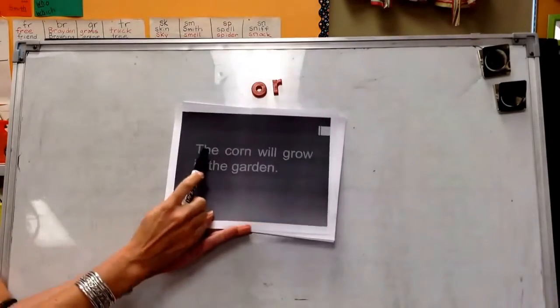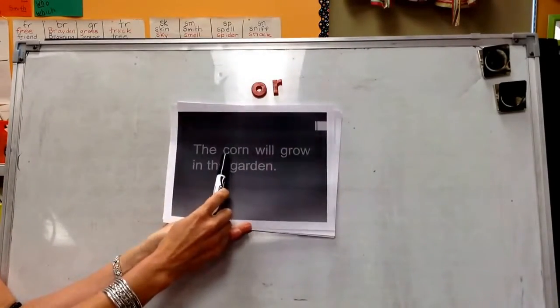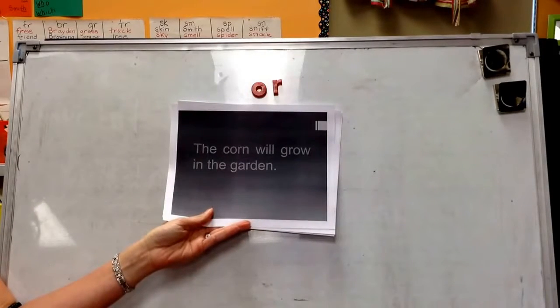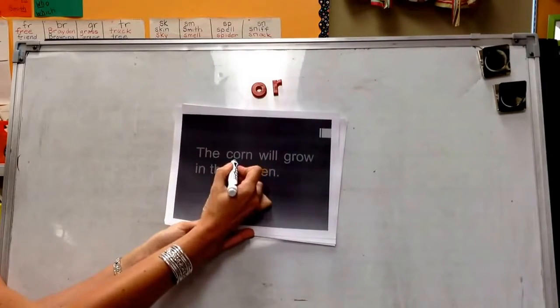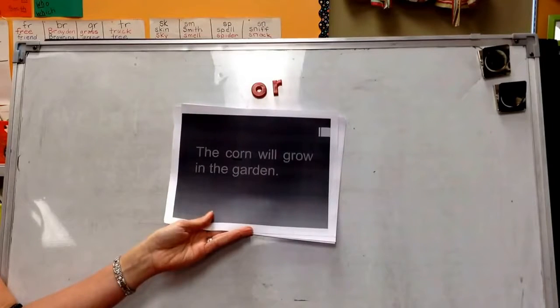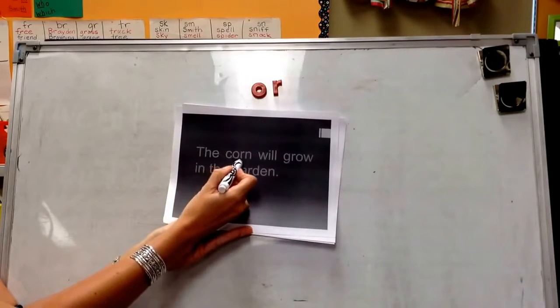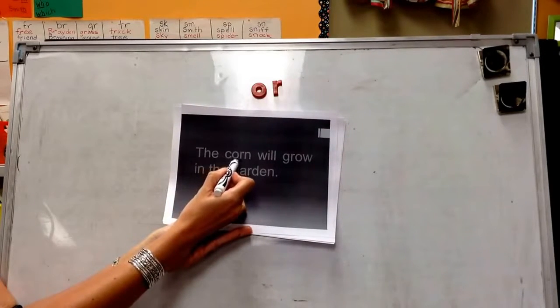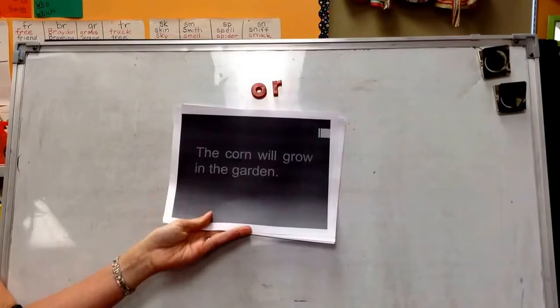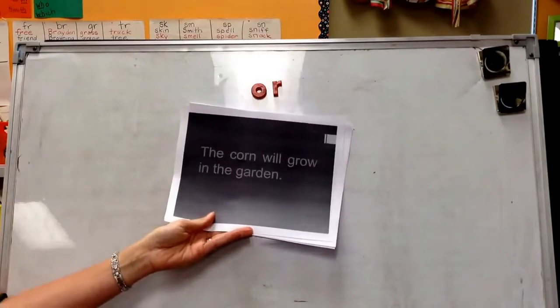This is our first sentence, the blank. I'm not sure what this word is, but I see OR, O-R. So I'm going to say it slowly reading that as OR, c-orn. The corn will grow in the garden.